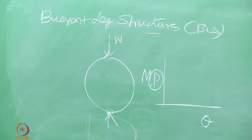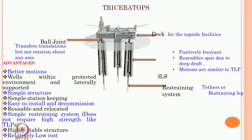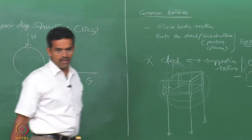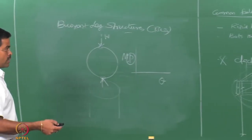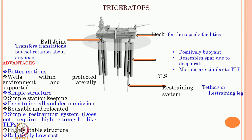Triceratops has many advantages: better motion characteristics, wells are inside and well protected, it is a simple structure with very good station-keeping characteristics, and is easy to reinstall and decommission. It is completely reusable and relocatable, with a simple restraining system because axial tether tension in the cables is not as high as a TLP — it is highly positive buoyant so high-strength tethers are not required. It is seen as a stable structure, and relatively low cost in the sense that reusability and relocatability add to the value of the platform — overall project cost is expected to go down.